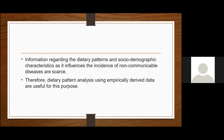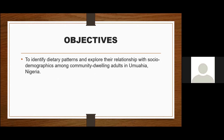Dietary pattern analysis using empirically driven data — in this case using principal component analysis — is useful for this purpose. Dietary pattern analysis using PCA has been used in many studies around the world, but in Nigeria it is scarce. This is likely the first study done on an adult population using principal component analysis. The objective of the study was to identify dietary patterns and explore their relationship with social demographics among community dwelling adults in Umayia, Nigeria.